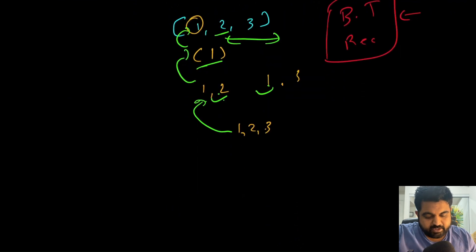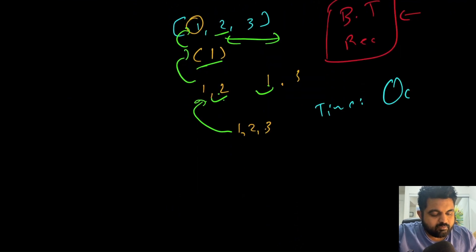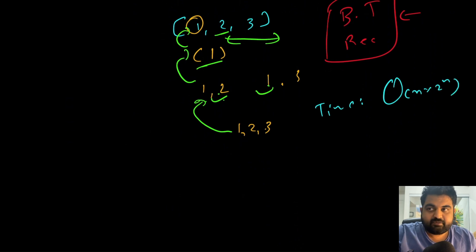The time complexity in this case is O(N × 2^N), because that accounts for all the possibilities we will have to check.